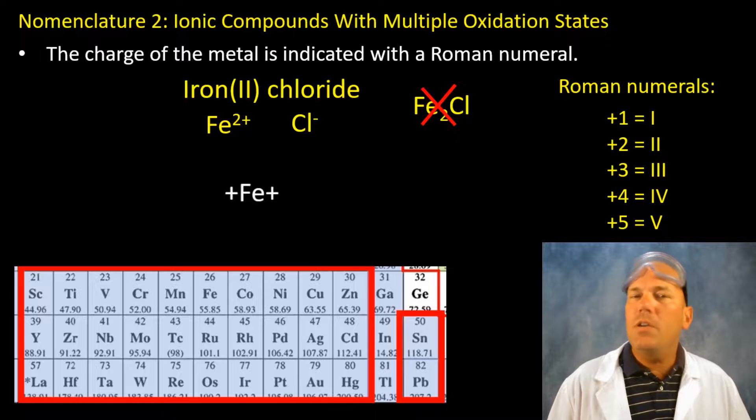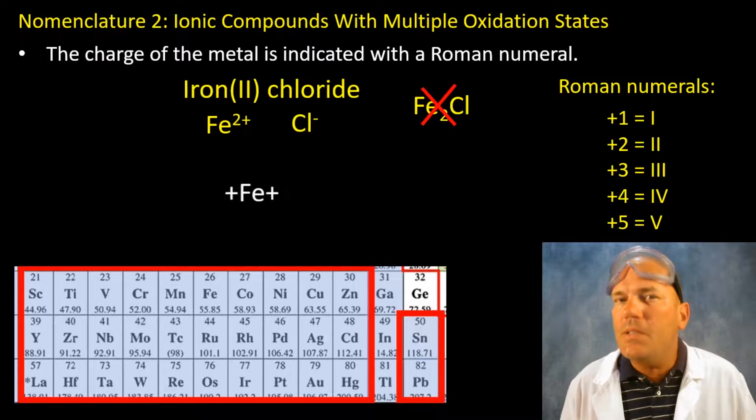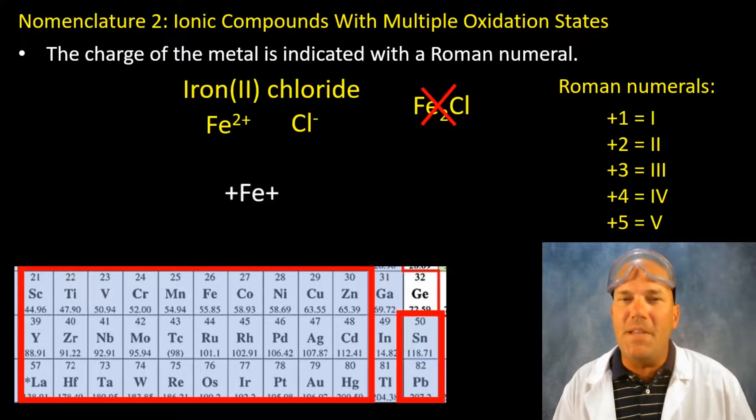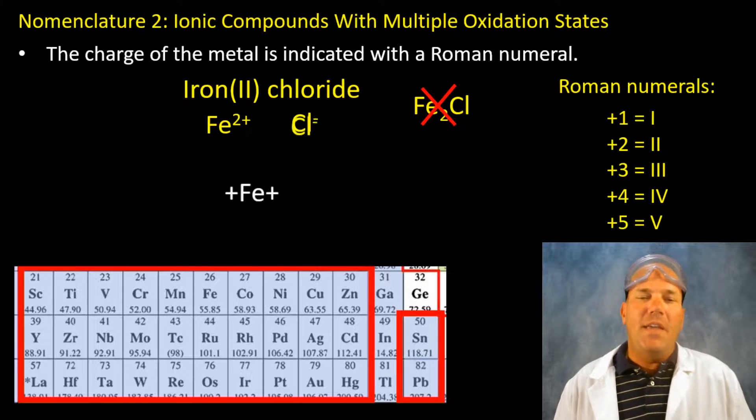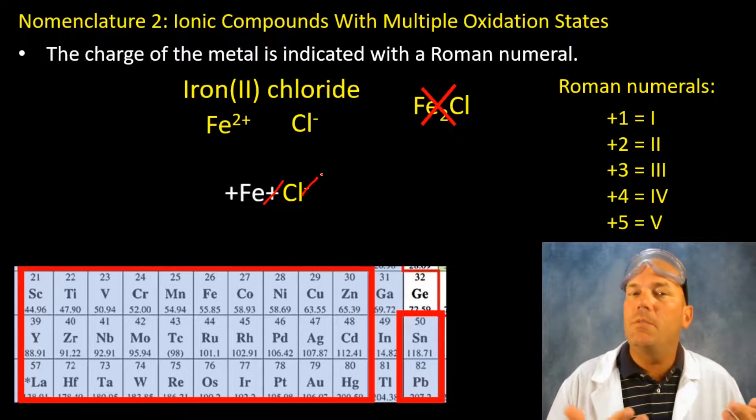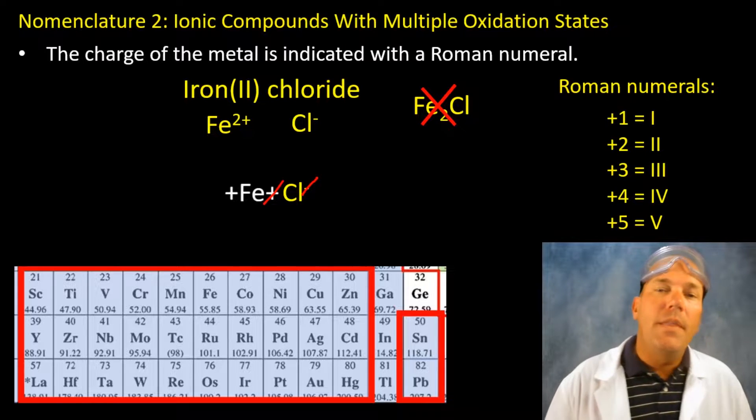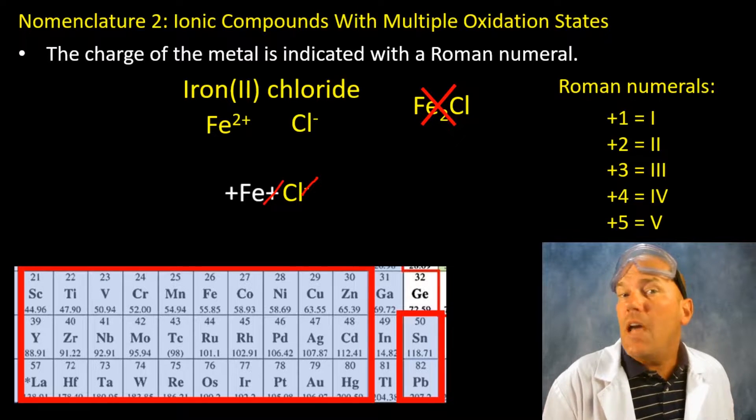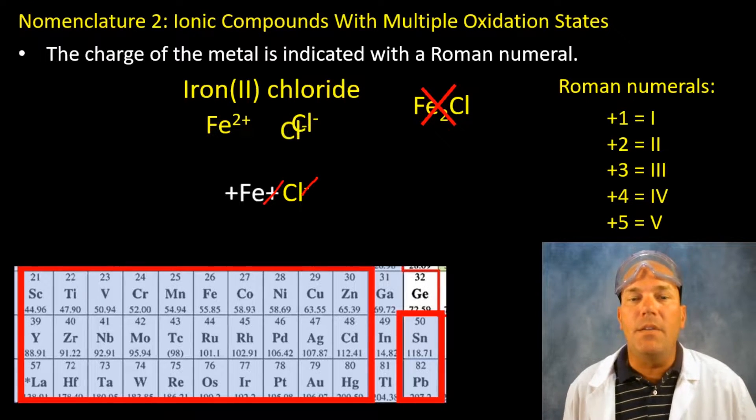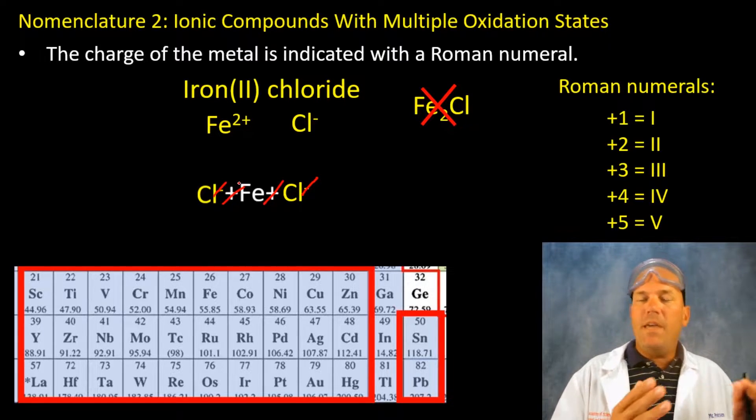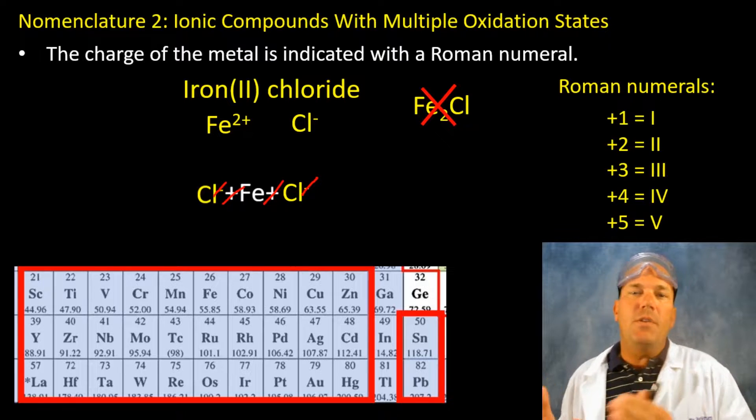So the charge of iron is plus two. I've put two pluses around iron. This is a simplified visual representation. And we have chlorine. I'm going to cancel one and one. But wait a minute, that leaves one positive charge. That means we're not balanced. The charges are not going to cancel. So let's bring in another chlorine. And now that we've done that we've canceled, for every plus there's a minus.